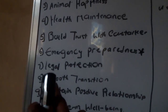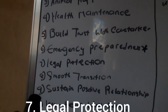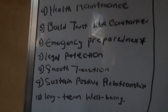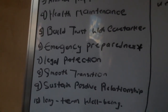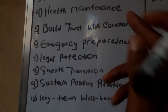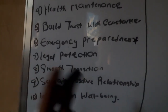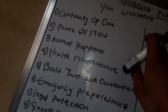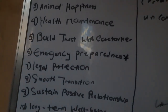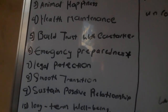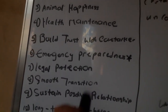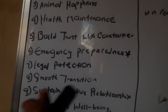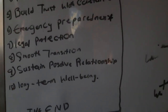Number seven is legal protection. If you listened to number six, you will notice that there will be legal protection in your farm through this succession planning, because you have someone there that will maintain the farm for you, and with that you have legal protection.